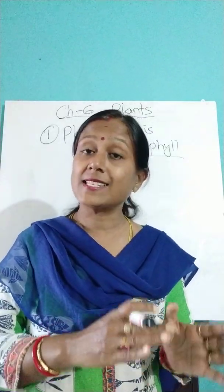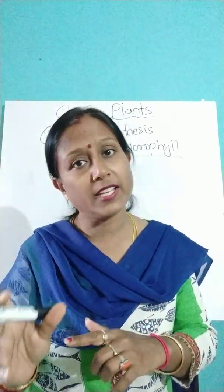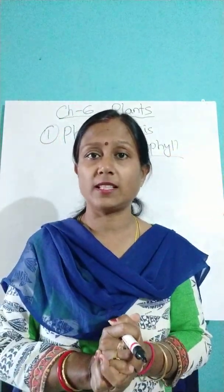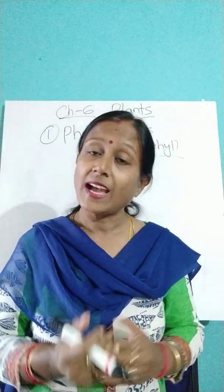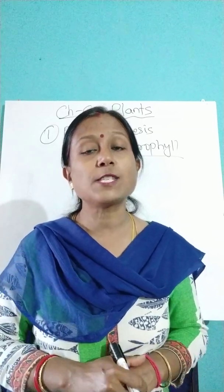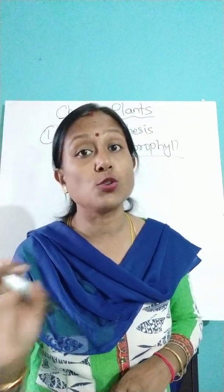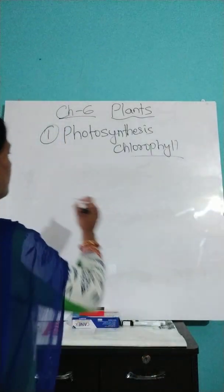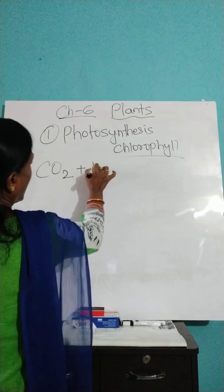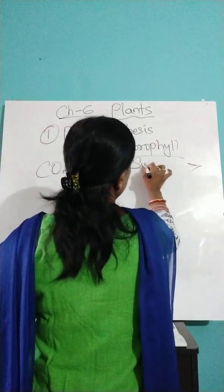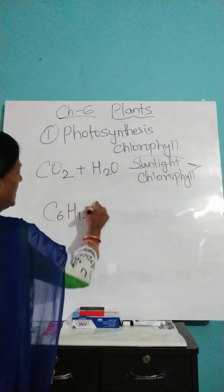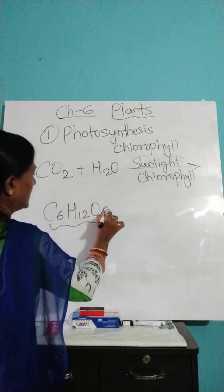The stem transports water and minerals to the leaf, which are absorbed by the roots. When all these things come together, they undergo a reaction and food is prepared. The food which is prepared in the leaves is a simple sugar known as glucose. Carbon dioxide when reacts with water in the presence of sunlight and chlorophyll, it forms sugar — C6H12O6 — which is glucose.